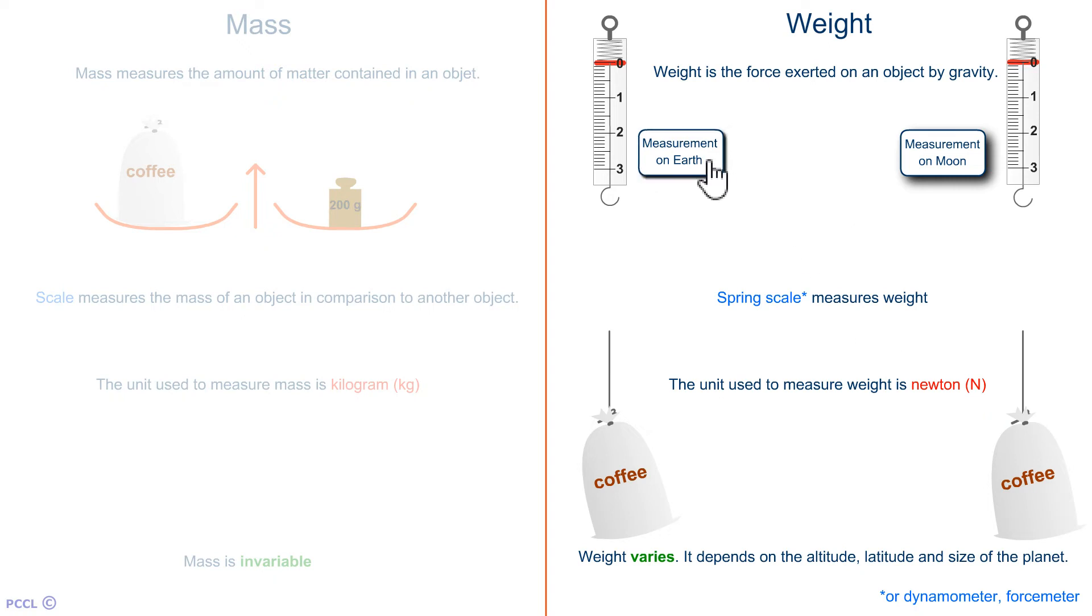If I measure on earth, I find about 2 Newtons. This is what the dynamometer says. The spring extends to the value 2. So, I write 2 Newtons with N uppercase.